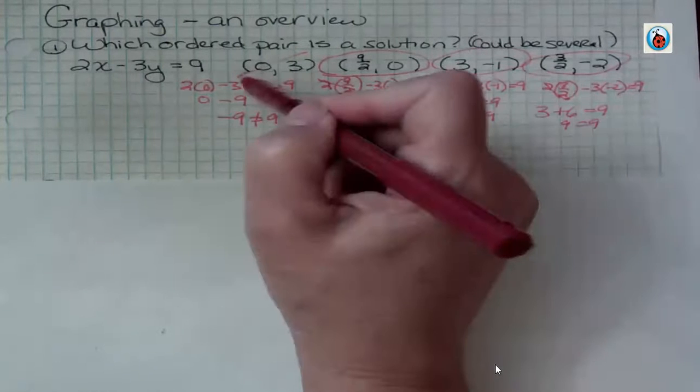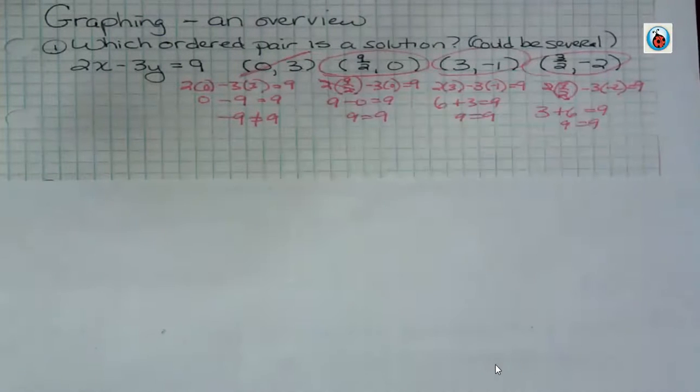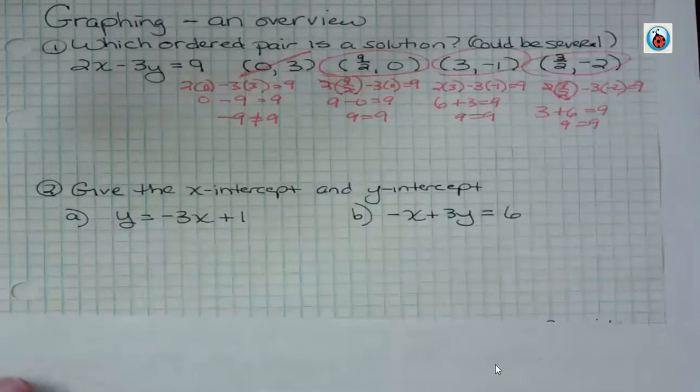If it's not a solution, put a strike through it. If it is, circle it, or however you're supposed to enter it. But every ordered pair should be addressed in some way, either yes or no. Don't just do one and then go on. Check them all.